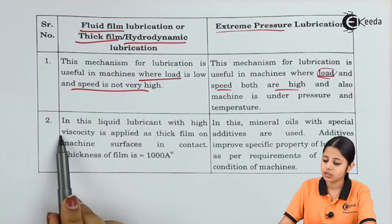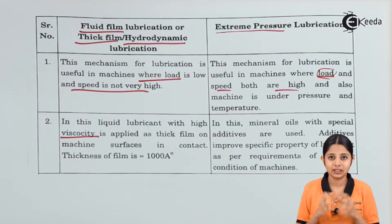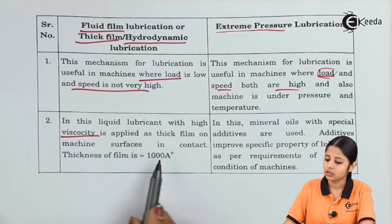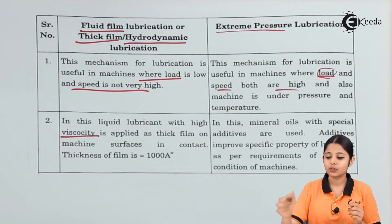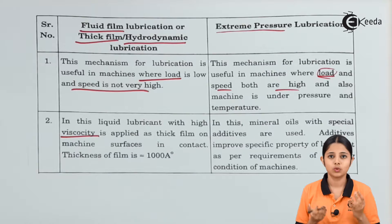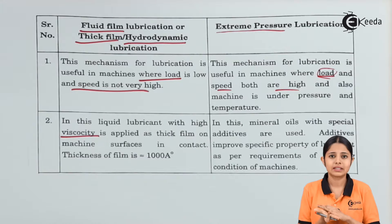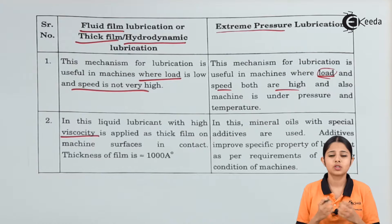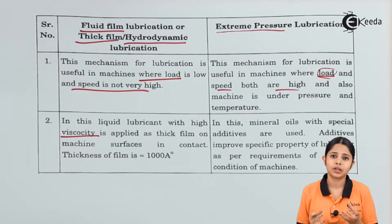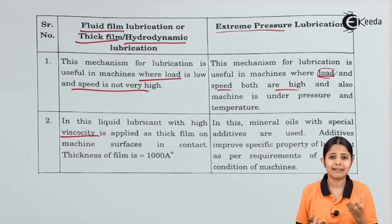In the fluid film mechanism, a liquid lubricant with high viscosity — meaning high thickness and density — is applied as a film on the machine surfaces and contact areas. The lubricants used should be semi-solid so they stick to the machine and do not spill away. We must also ensure that the viscosity of the lubricant remains high at higher temperatures as well, since many machines operate at elevated temperatures.